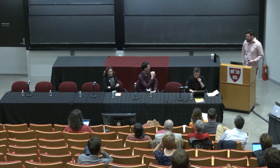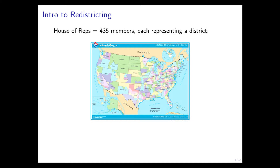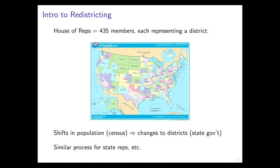By now I think you understand the story of redistricting, but just briefly: there are so many representatives in the House of Representatives and each one represents a district. Some districts make up an entire state; other states are broken up into a bunch of districts. The signal we use to break up states into districts is the census. So every 10 years we know where everybody lives and we break states up into districts accordingly.